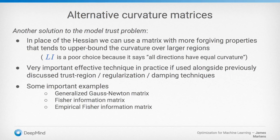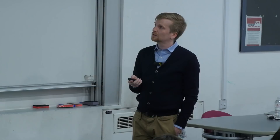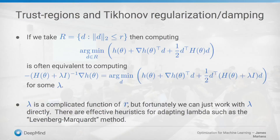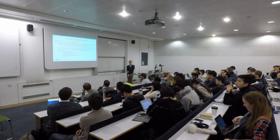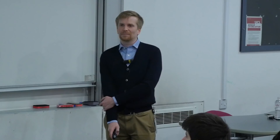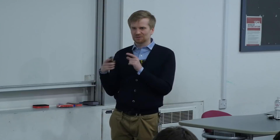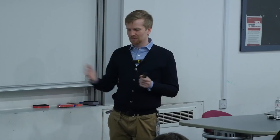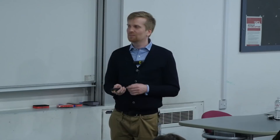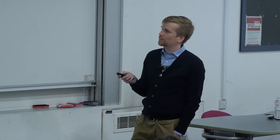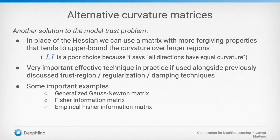A question about whether solving such a matrix is O(n²): yes, that's the other big problem, and it has to be solved in conjunction. Examples of alternative matrices are the generalized Gauss-Newton matrix, the Fisher information matrix, and the empirical Fisher information matrix — these are the three matrices used in neural net research.